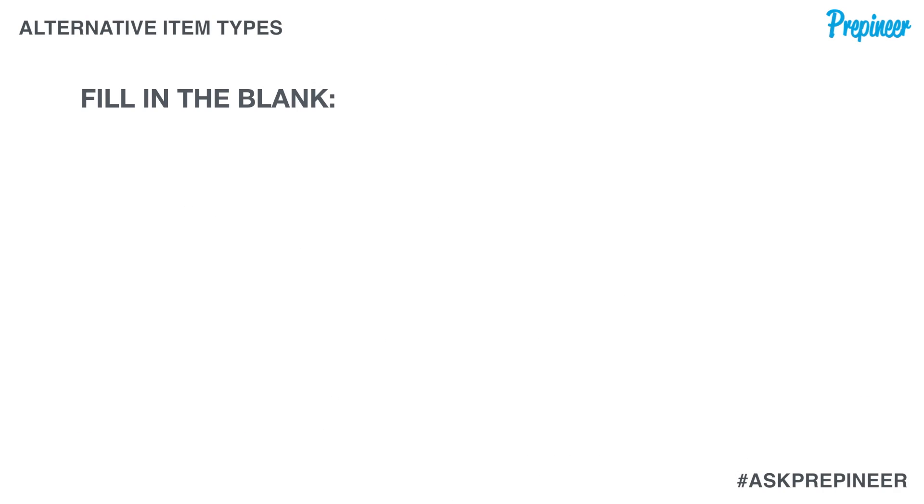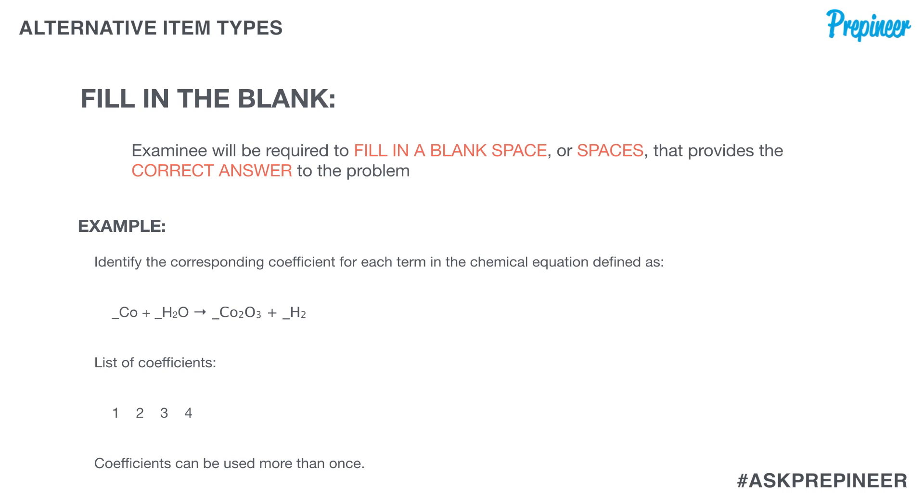Now the final problem type is fill in the blank. This will provide a space for you to enter a response to the question. So here's an example. Say the problem says identify the corresponding coefficient for each term in the chemical equation defined as such. So we have a chemical equation right there, we're given a list of coefficients.